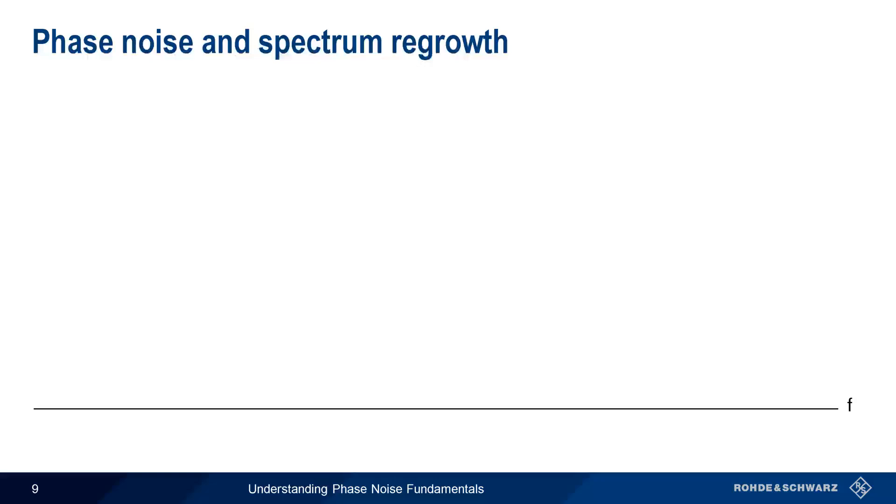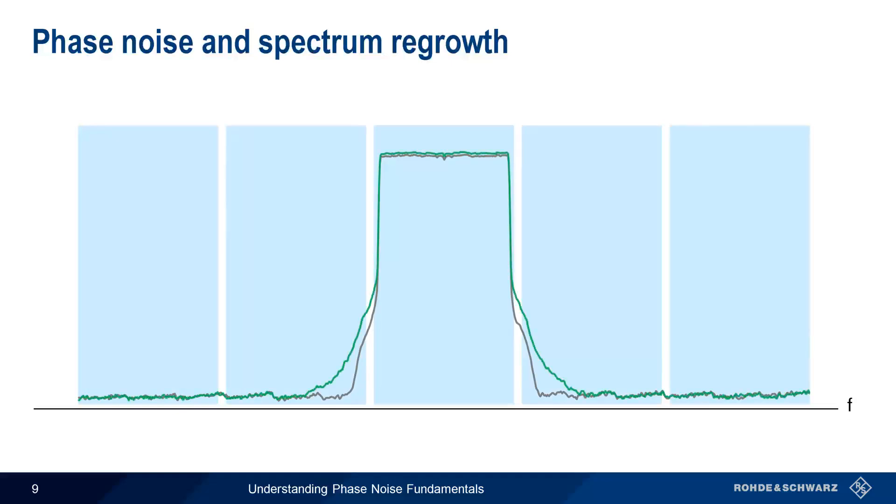Let's look a little bit more closely at phase noise and spectral regrowth, this time with a wider bandwidth signal, such as the kind used in LTE, 5G NR, Wi-Fi, etc. If our local oscillator has low phase noise, the signal will be mostly contained within its assigned channel, with very little power leaking into the adjacent channels. But as the level of phase noise increases, we see the signal becoming wider and spreading further into these adjacent channels. And at high levels of phase noise, this regrowth or adjacent channel leakage can become quite severe, causing significant interference.